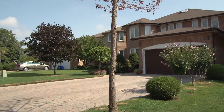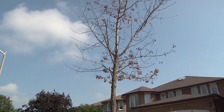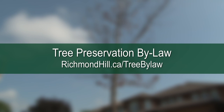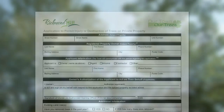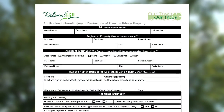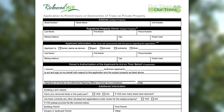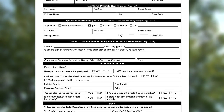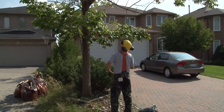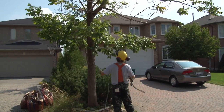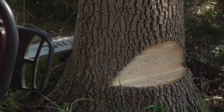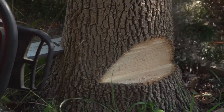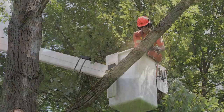If you plan on removing an ash tree from your property, remember to abide by Richmond Hill's Tree Preservation By-law, which requires that you obtain a permit before removing the tree. Permit fees for ash tree removals will be waived for the duration of the Emerald Ash Borer Management Strategy, approximately 8 to 10 years, but an application must still be submitted to obtain a permit.